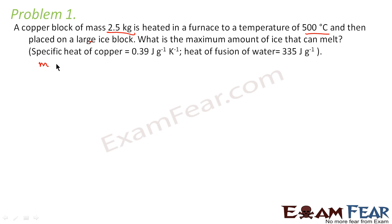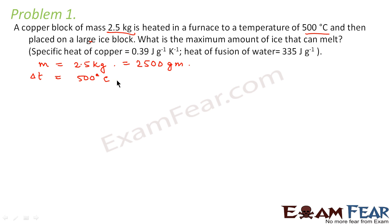Here, what is given: mass of the copper block is 2.5 kg, which is 2500 grams. Change in temperature is 500 degree Celsius — that is in the initial scenario when the copper block is kept on a heated furnace. The specific heat of copper is 0.39 joule per gram per kelvin.